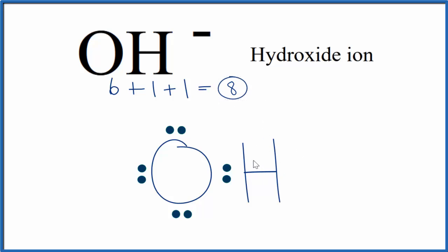Hydrogen only has 2 valence electrons here, but that's okay. Hydrogen only needs 2 valence electrons when we draw Lewis structures. So this is the Lewis structure for the hydroxide ion.